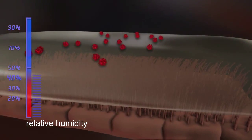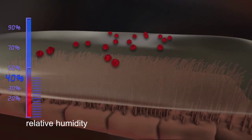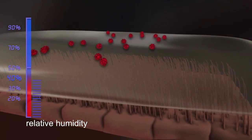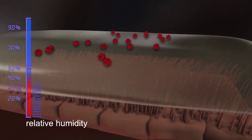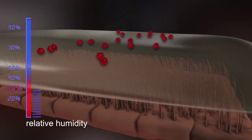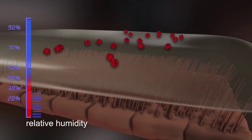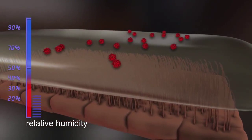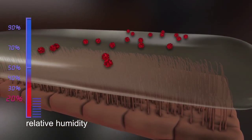Experiments have shown that the fastest transportation of pathogens, and thus the lowest risk of infection, is achieved at levels above 45% relative humidity. As humidity drops below this value, the cilia find it increasingly harder to move, and the risk of infection increases.